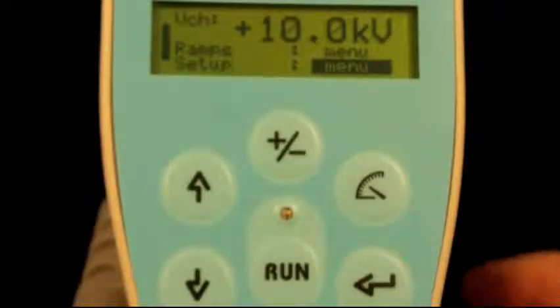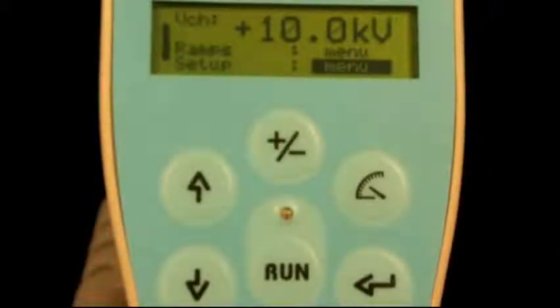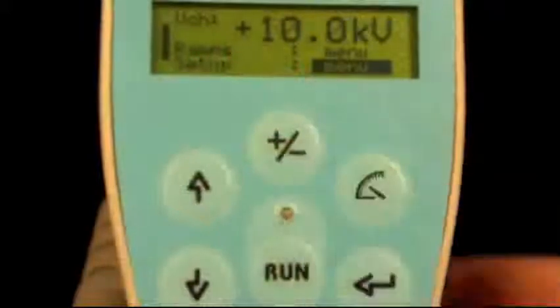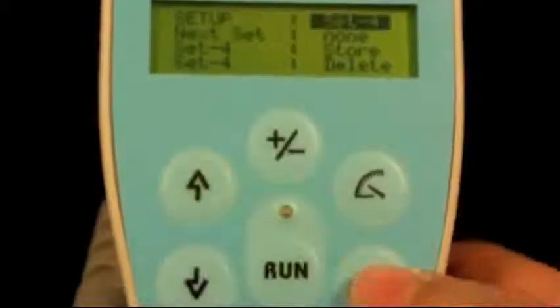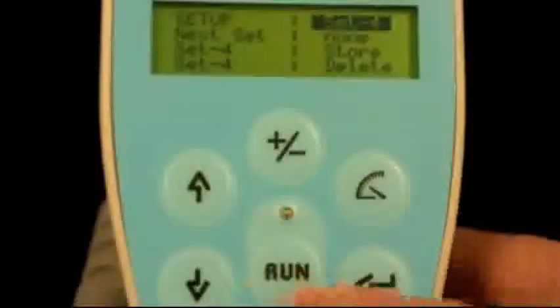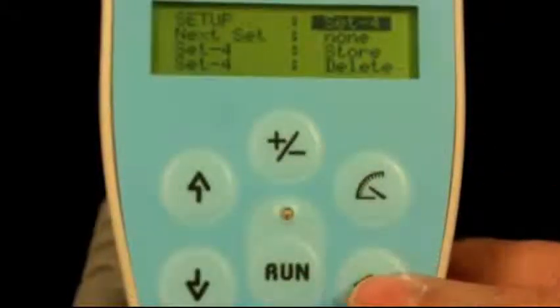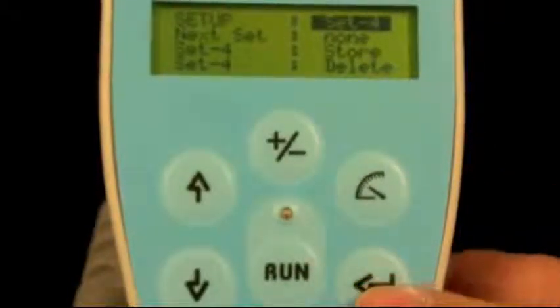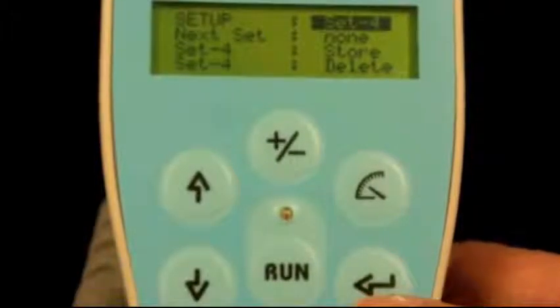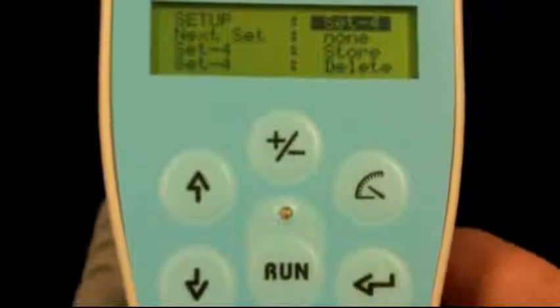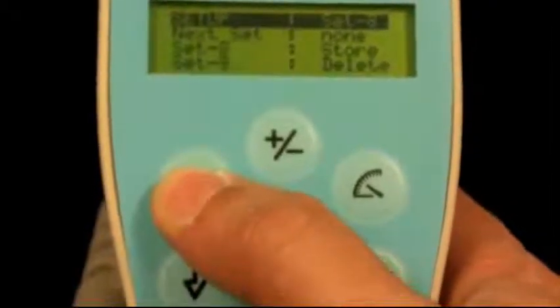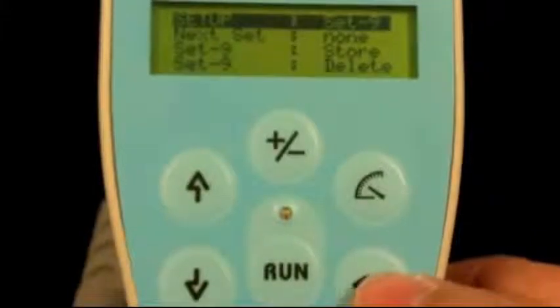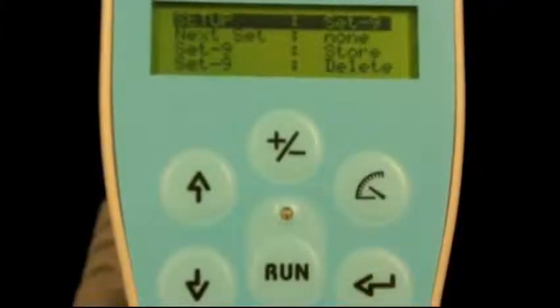The other option that the ESD3000 comes with are setups. You can select enter. The setups meaning it has capability of storing specific programs onto the ESD gun so you don't have to reprogram your gun every time. There are up to 9 locations available to store specific programs.